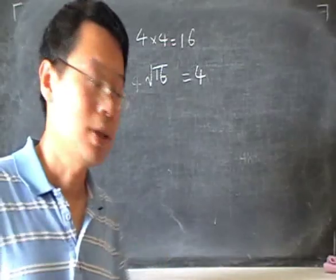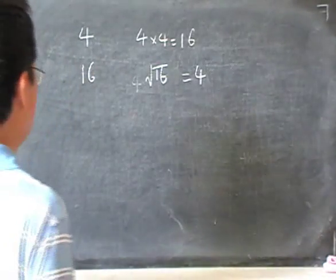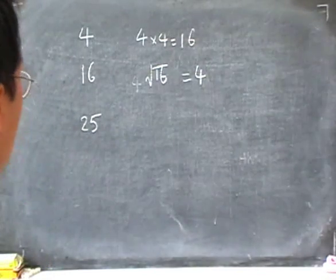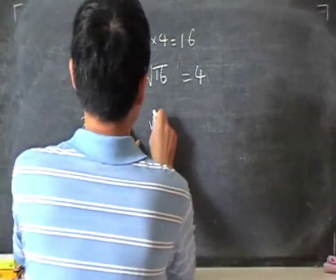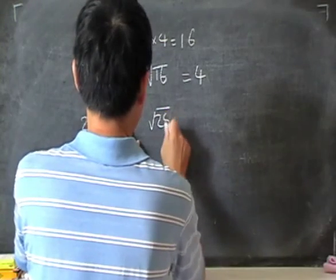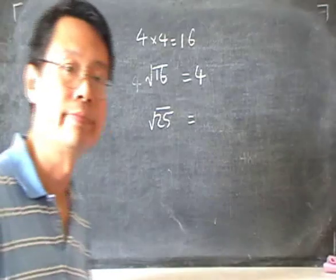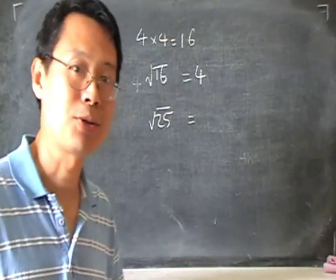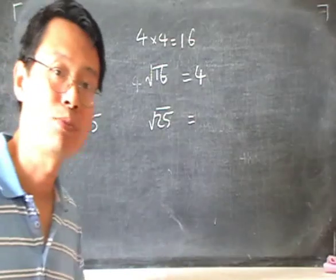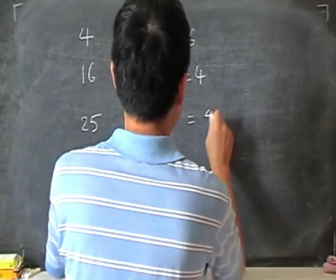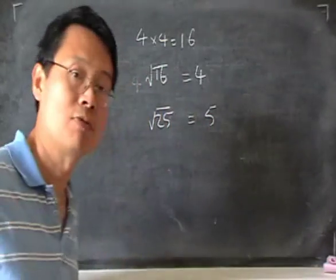Let's do a number, a square root of a number directly. Say 25. The square root of 25 is, we can use a calculator, or if we had some practice in multiplications, we'll know that the answer is 5, because 5 times 5 gives 25.